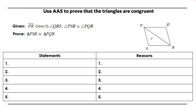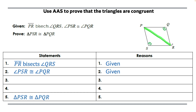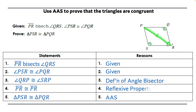Last proof: PR bisects angle QRS — given. Angle PSR is congruent to angle PQR — given. We're proving triangle PSR is congruent to triangle PQR using angle-angle-side. Because of the angle bisector, angle QRP is congruent to angle SRP by the definition of angle bisector. Then PR is congruent to PR by the reflexive property. That gives us angle-angle-side.